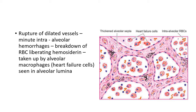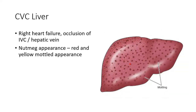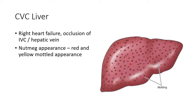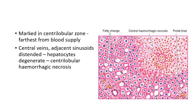Heart failure cells are shown here in the diagram. Coming to CVC liver, this occurs in right heart failure or sometimes due to occlusion of the inferior vena cava and hepatic vein. Grossly, the cut surface shows a characteristic nutmeg appearance — a red and yellow mottled appearance. Microscopically, the changes are more marked in the centrilobular zone, because this zone is farthest from blood supply and any disorder affecting blood supply affects this area most severely.